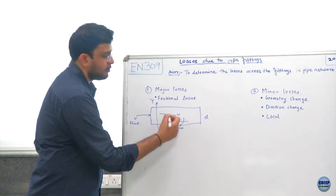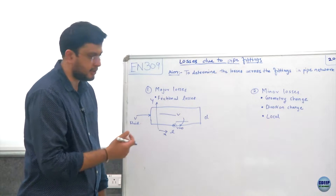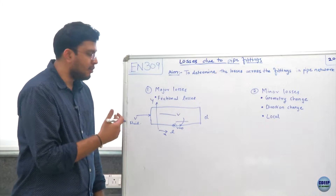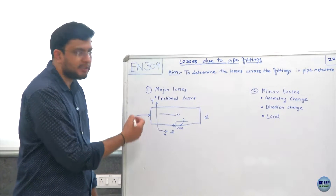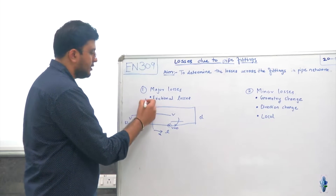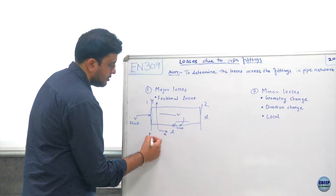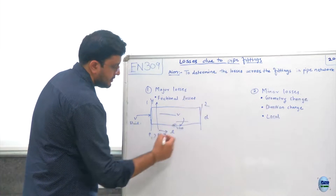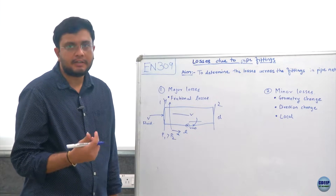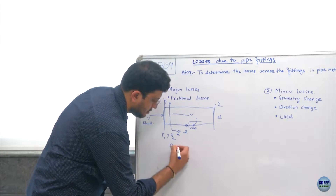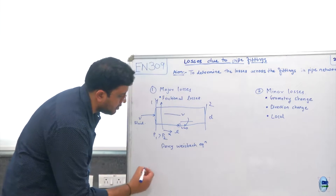In order for the fluid to flow in the intended direction, it needs to overcome those frictional or viscous forces. While overcoming those forces, flow energy is consumed, and that consumed flow energy is depicted as head loss. If we take any two sections — section 1 and section 2 — across the pipe, the pressure at section 1 will always be higher than pressure at section 2. This reduction in pressure is given by the Darcy-Weisbach equation, HL.